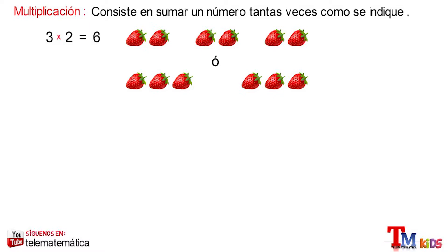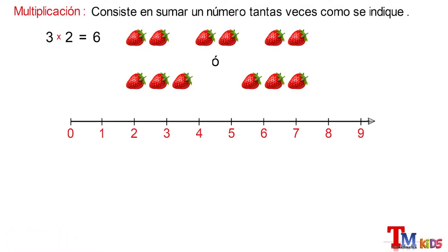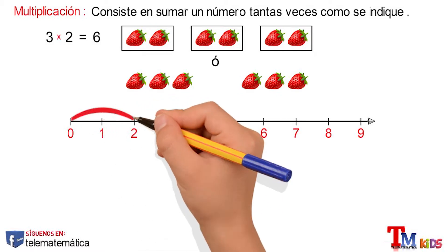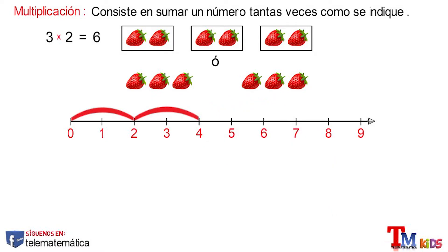Now, how to represent this multiplication in the numerical semicircle? First, we will start representing 3 times 2. From 0 in the semicircle, we give a first jump of 2 units, a second jump of 2 units, and a third jump of 2 units, and we reach the value 6, which is the result of the multiplication.